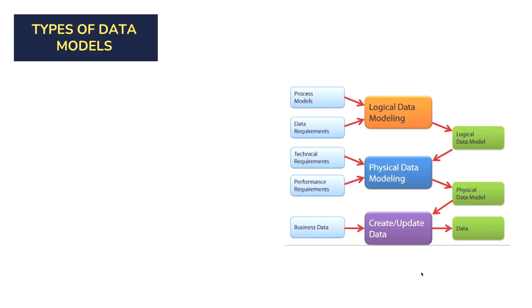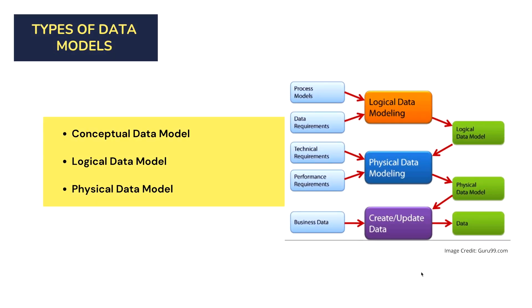Now let's discuss one by one what are the different types of data models. Basically, there are three different kinds of data models: namely conceptual data model, logical data model, and physical data model.